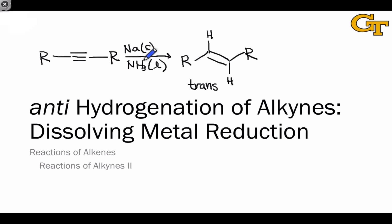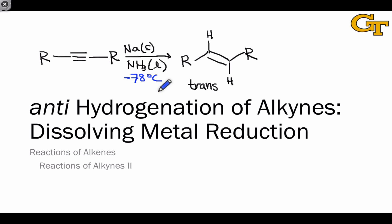To make this happen, we make use of reaction conditions involving metallic sodium — that is, sodium in the zero oxidation state, sodium metal — and liquid ammonia. Because we're talking pure liquid ammonia here, not a solution, this needs to take place at low temperatures, usually around minus 78 degrees Celsius, anywhere below the minus 33 boiling point of NH₃. When we mix solid sodium with liquid ammonia, the metal actually dissolves into the liquid ammonia, and so this is called dissolving metal reduction.